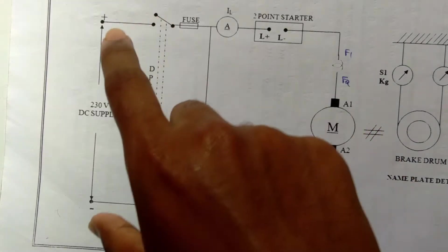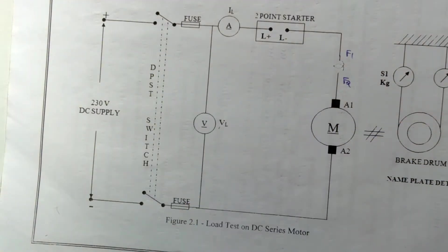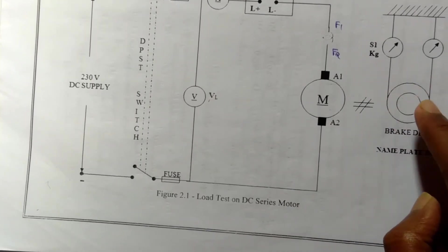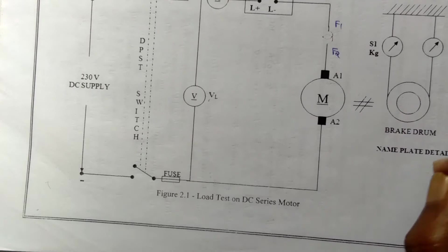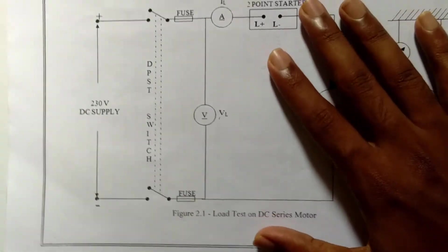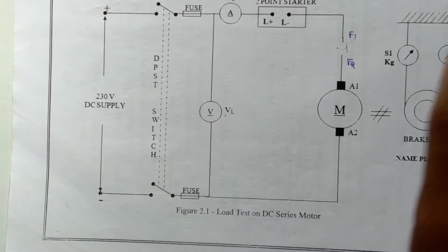While making any changes in the circuit, the DPSC switch must be kept open. Heat produced due to friction between the belt and the brake drum is released by adding water into the brake drum periodically.